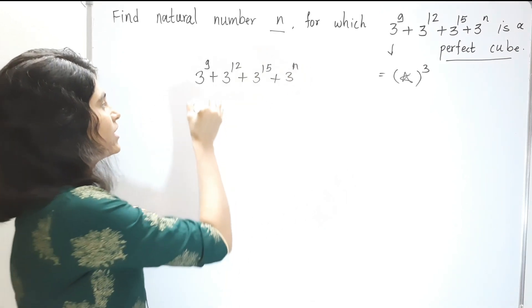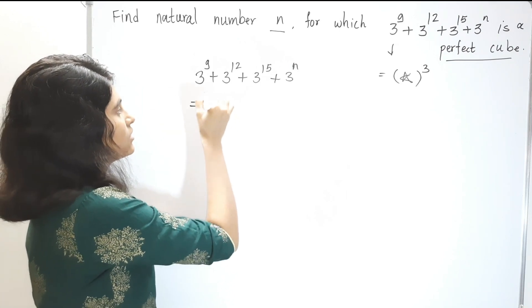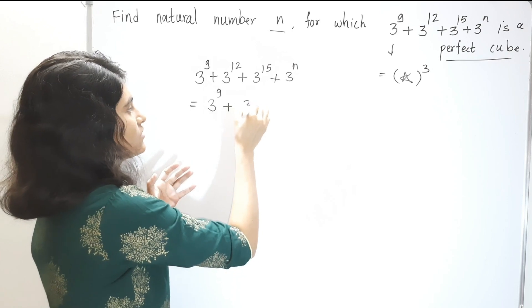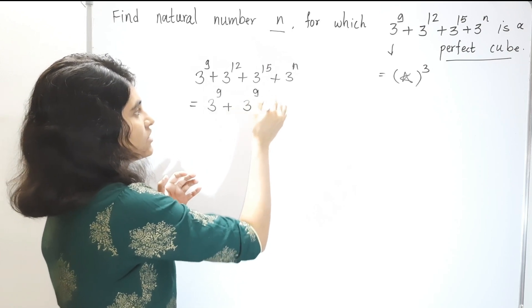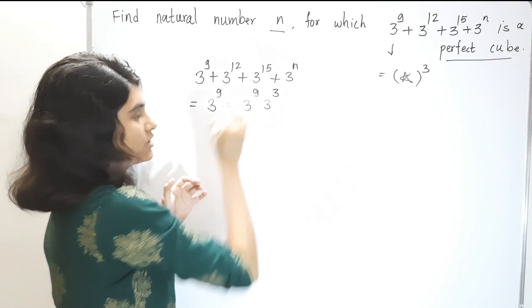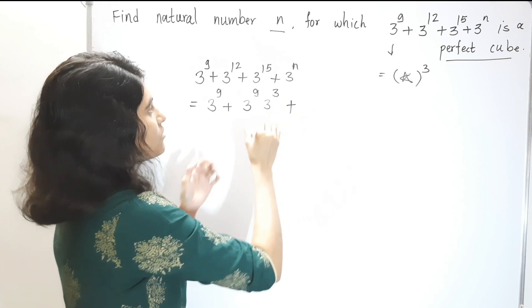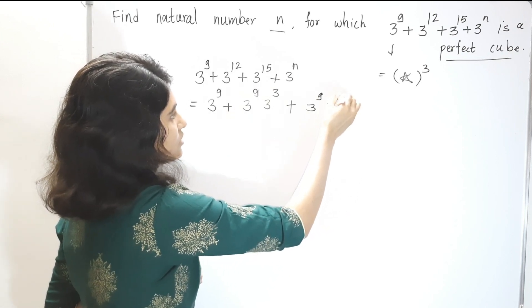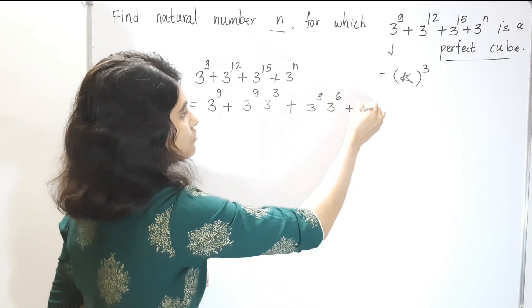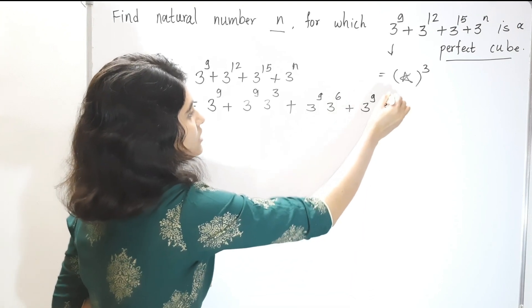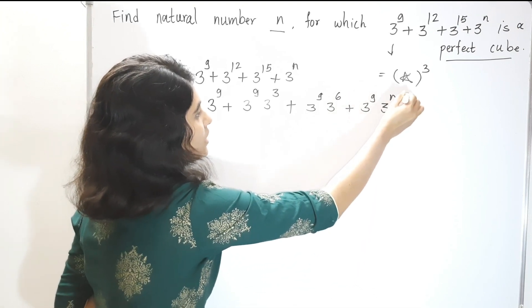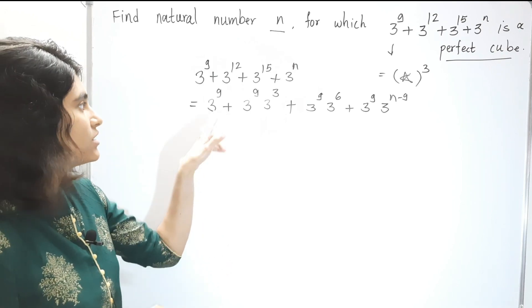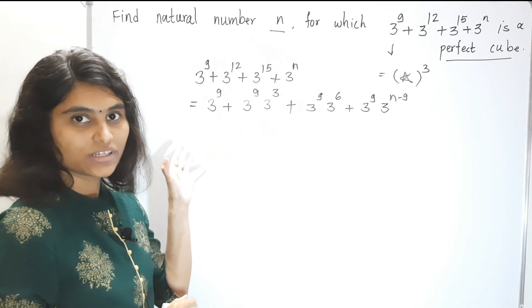Now we can write this as 3^9 plus — what is 3^12? This is 3^9 times 3^3. Plus, similarly, 3^15 is 3^9 times 3^6, plus 3^9 times 3^(n−9). Now we can take 3^9 as a common factor.